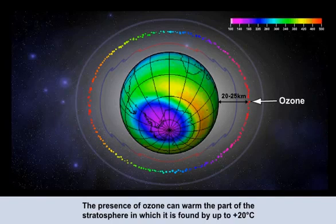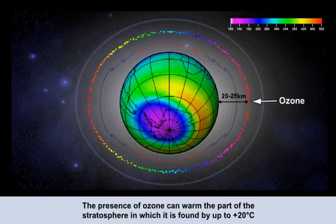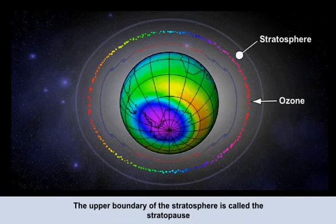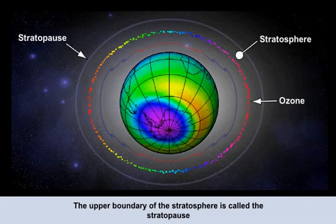Concentrations of ozone are at a maximum at around 20 to 25 kilometres above the Earth's surface. Due to latitude effects and the depletion of ozone during the polar winter, the temperature through this part of the stratosphere can vary from minus 30 to plus 20 degrees Celsius annually. A colour representation of ozone depletion is superimposed on the Earth, with the purple area over Antarctica showing the greatest depletion. Where the temperature starts to fall again signifies the top of the stratosphere — its upper boundary, called the stratopause.